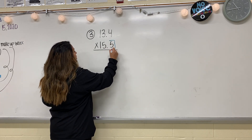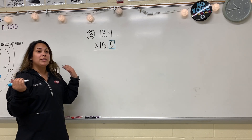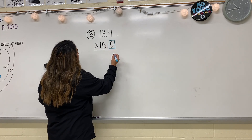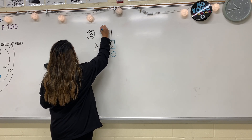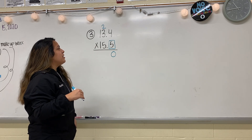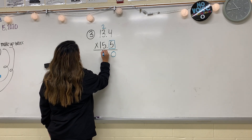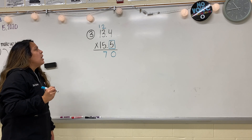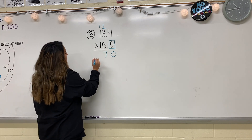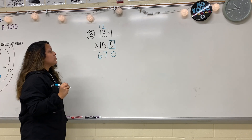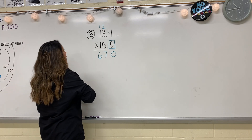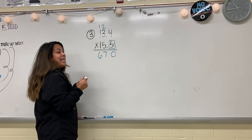I'm going to box the number in the tenths place first so I can multiply 13 and four tenths by five. Four times five is 20 — put my zero, carry my two. Three times five is 15; 15 plus two is 17 — put my seven, carry my one. One times five is five, and five plus one is six. I don't have any other numbers that need to be multiplied by five, so I'm going to move on to the next place value.